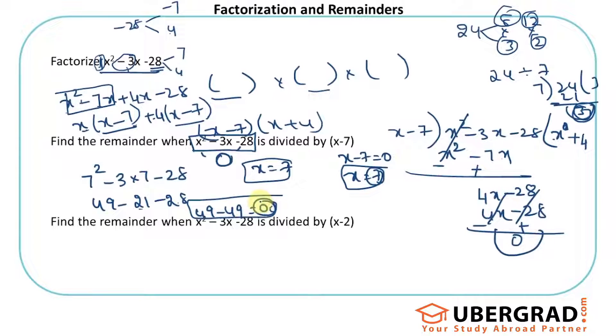Similarly, find the remainder when x² - 3x - 28 is divided by x - 2. I'll do x - 2 = 0, so x = 2. Substitute: 2² - 3(2) - 28 = 4 - 6 - 28 = -30. So the remainder is -30.